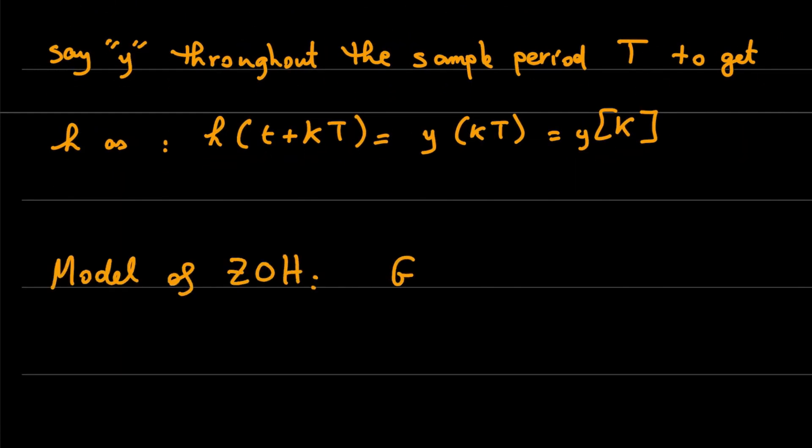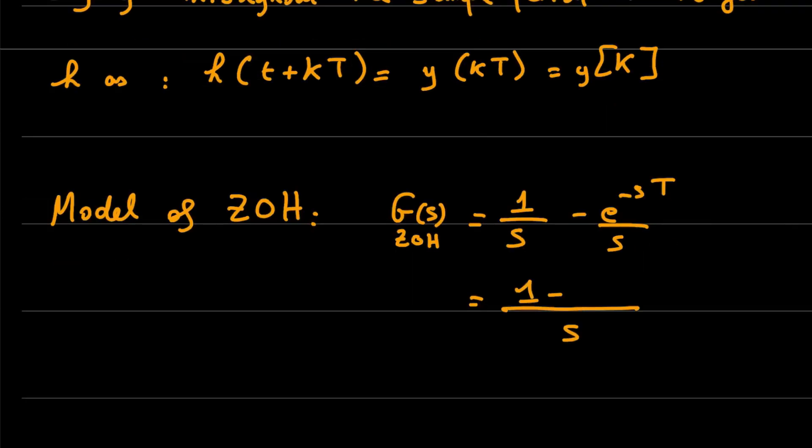What is the model of zero-order hold? It is given in this transfer function: we have 1 over s minus exponential minus sT over s, where T is the sampling period.